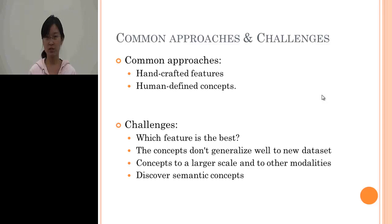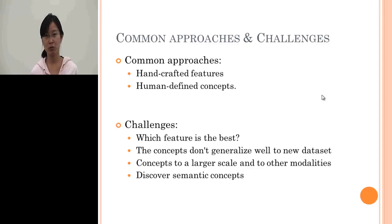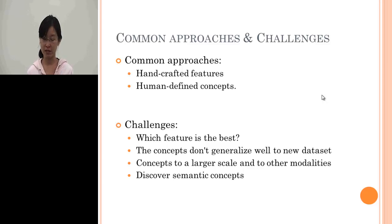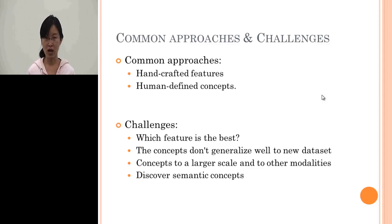There are several challenges in this task. First, we don't know which hand-designed feature is the best among the many proposed. Based on the concept detectors we already have, like the SBU 50 concept detectors, they do not generalize very well to the TRECVID dataset. It is also very hard and expensive to collect concept datasets at a larger scale and across other modalities. The question is: can we discover semantic concepts directly from the TRECVID data instead of manually annotating it?